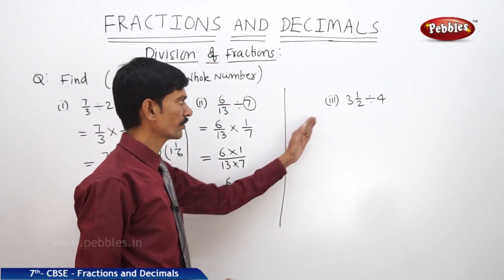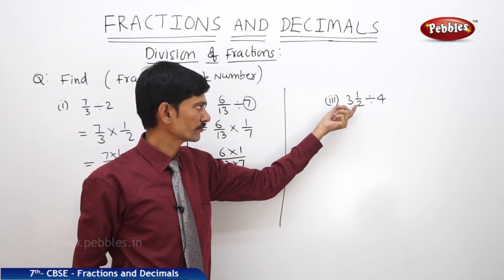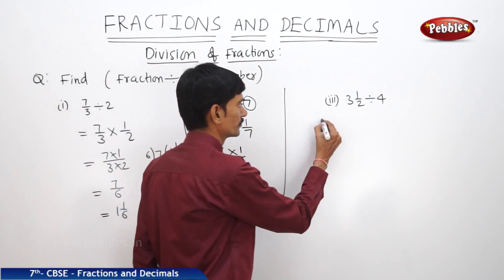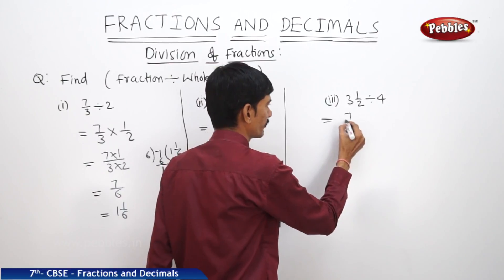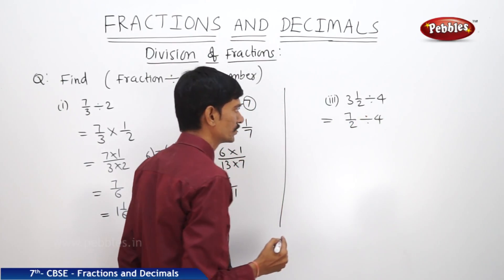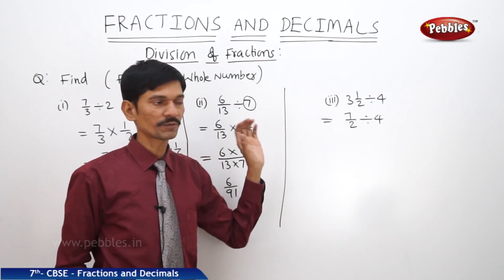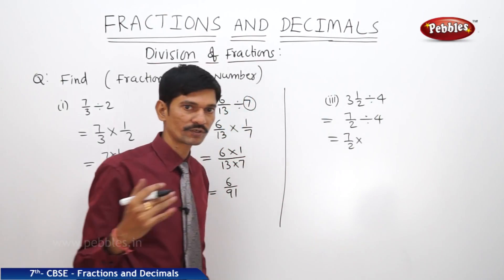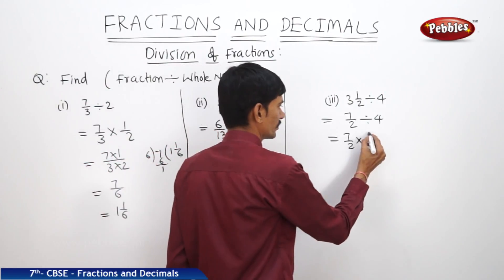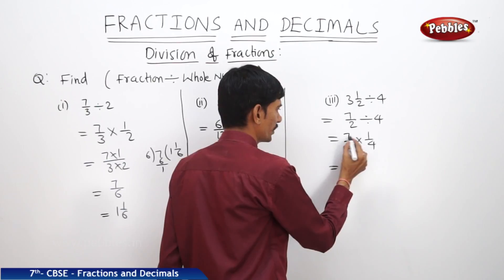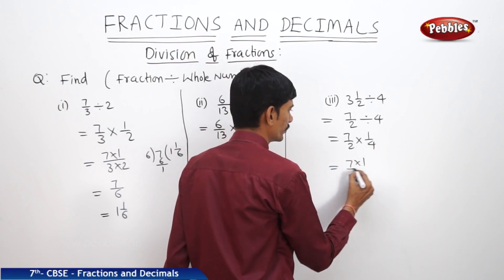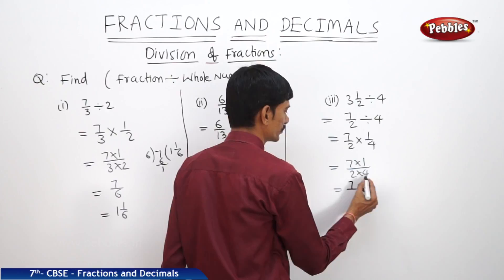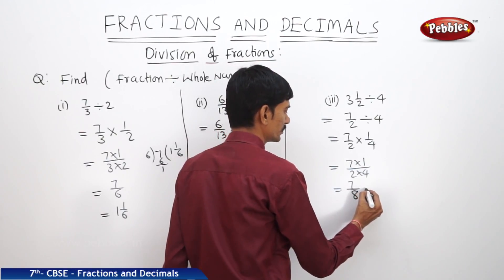Next: 3½ divided by 4. Since 3½ is a mixed fraction, we first convert it to an improper fraction: 2×3 + 1 = 7, so it becomes 7/2. Now to divide 7/2 by 4, we multiply by the reciprocal of 4, which is 1/4. This gives us 7×1 / 2×4 = 7/8, which is a proper fraction.